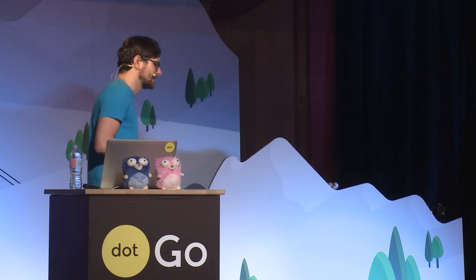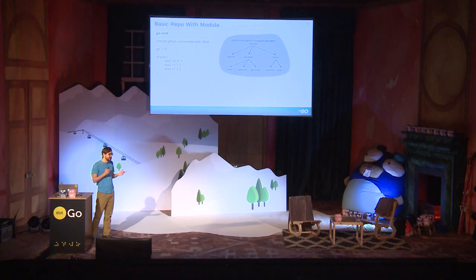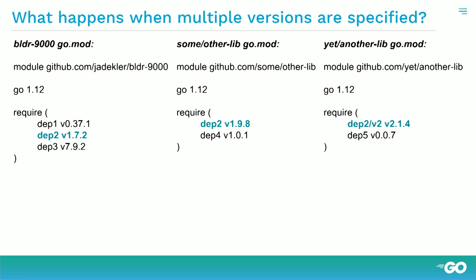To think about MVS — and specifically the one aspect I want to touch on that will be relevant later — let's imagine a fictional user depending on Builder 9000 as well as two other libraries. Here are the go.mods for these three libraries, and you'll notice each of them depends on a library called depth-two. So the user transitively depends on depth-two in three ways: via Builder 9000 at v1.7.2, via some other lib at v1.9.8, and via depth-two v2 at v2.1.4. The slash v2 is significant — we'll get to that.